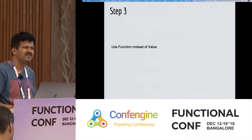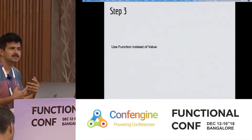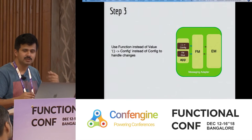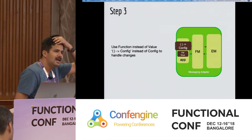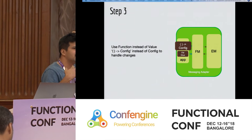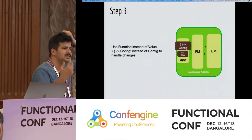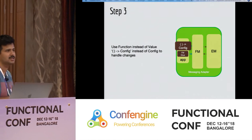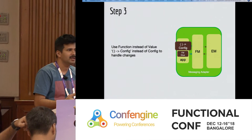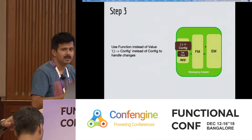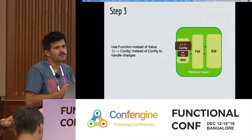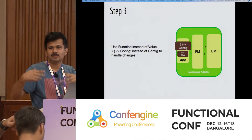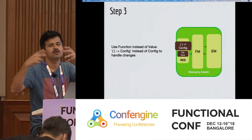Step three is very specific but a nice idea: use functions instead of values. The config was a value earlier, and we had challenges propagating config changes to multiple places. What we really passed around is not a config value but a function — you invoke it and you get a config. That way, at any point in time when the config changes, every time somebody wants a config, they invoke the function and get the latest.